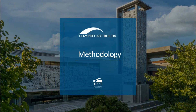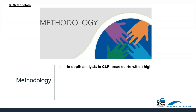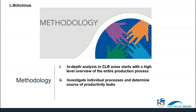Now that we've explored the three main elements of CLR — cycle time, labor, and rework — what are the next steps to put this into practice? There are three steps to the CLR methodology. First, an in-depth analysis in CLR areas starts with a high-level overview of the entire production process. Second, investigate individual processes and determine source of productivity leaks. And third, determine the cost and viability of automation within each process.